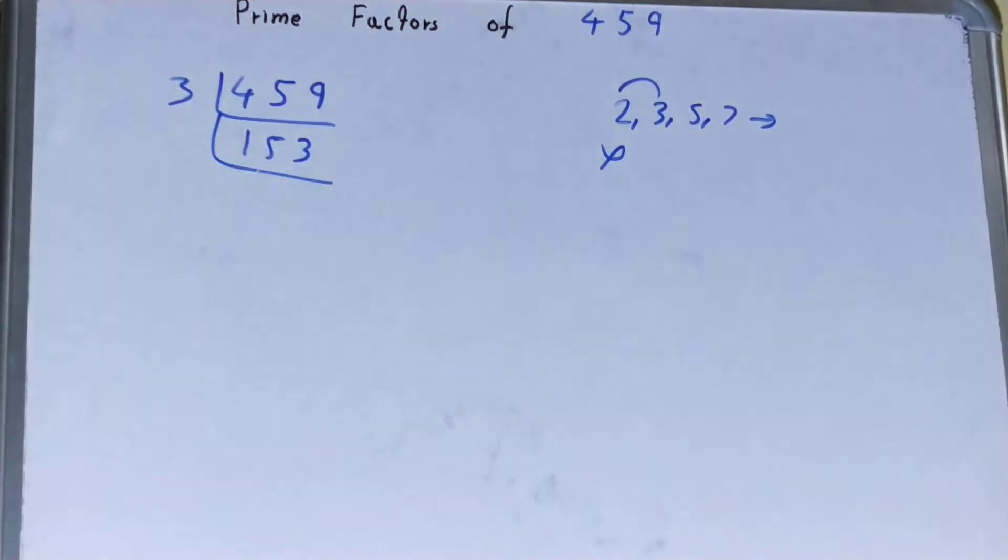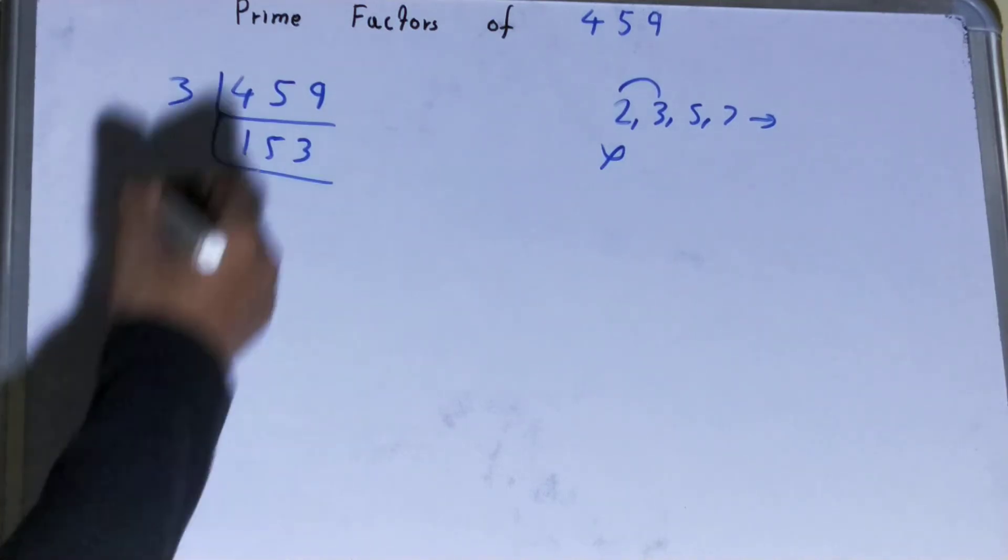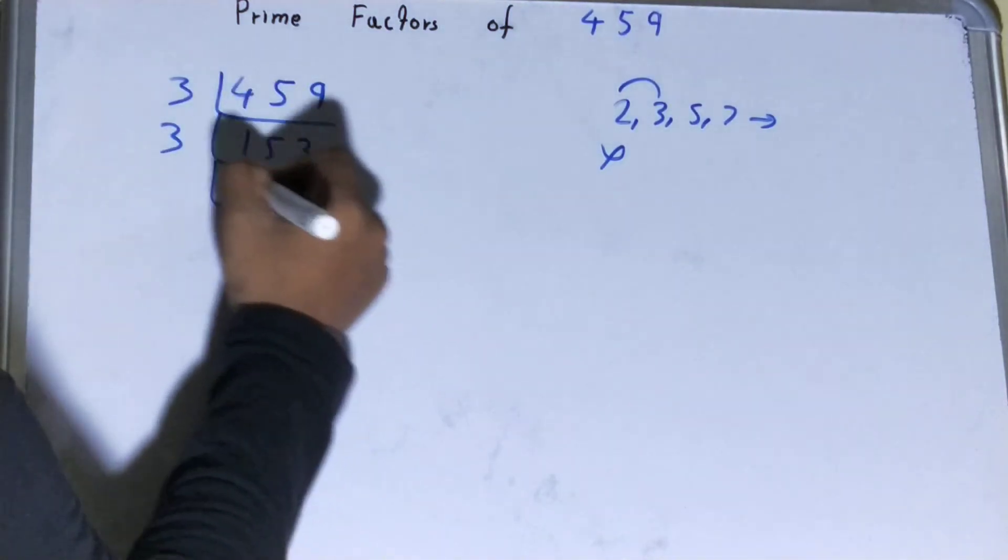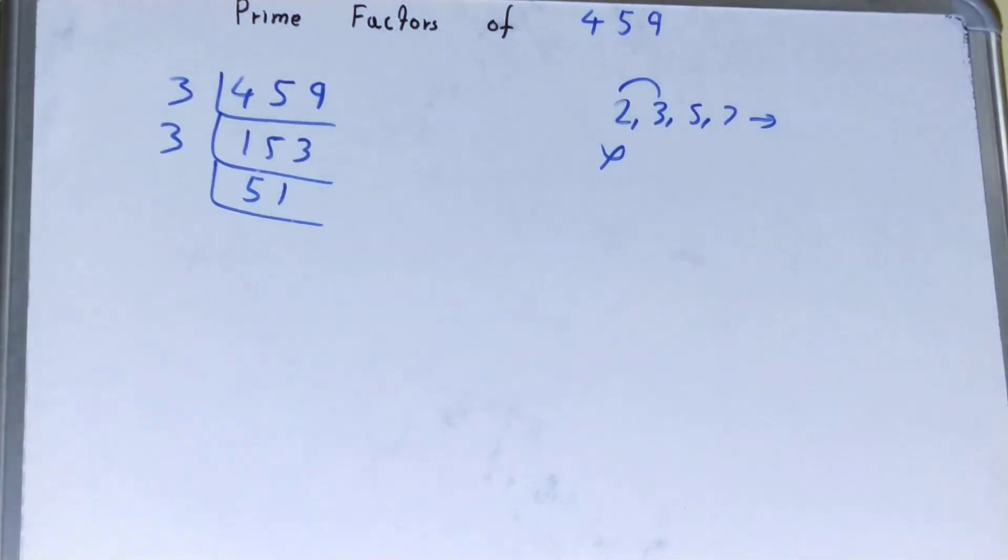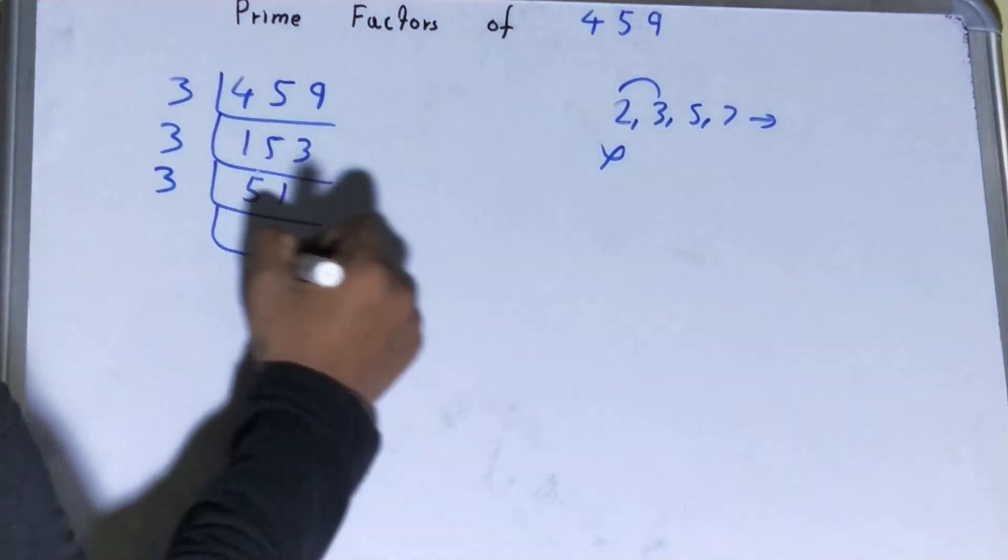Now is the number 153 divisible by 3? Yes it is divisible, so divide it. It will go in 51 times. Is this 51 further divisible by 3? The answer is yes, so divide it and you'll be left with 17.